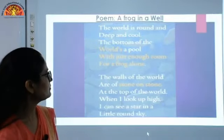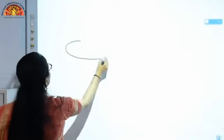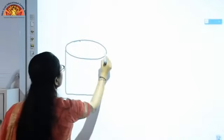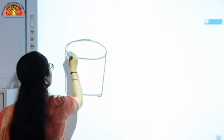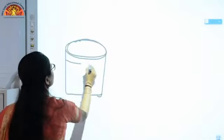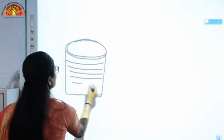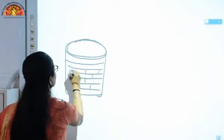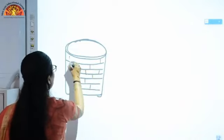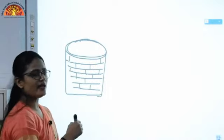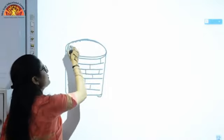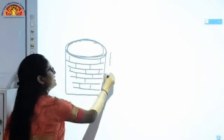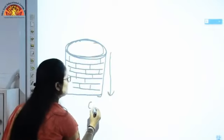I will show you. Suppose this is a well. Now you can see the shape of the well. It is round and there are stones on stones — AQ per AQ. You can see there are stones; like this the well is made. Now the frog is inside this well. According to him, the well is of round shape. It is very deep and it is very cool also.